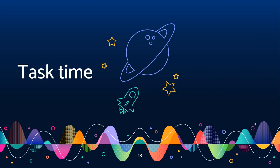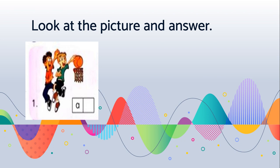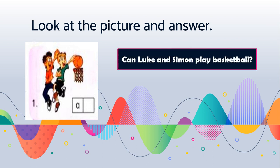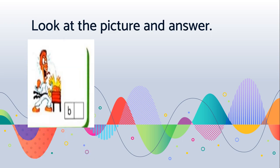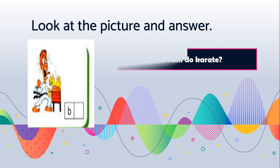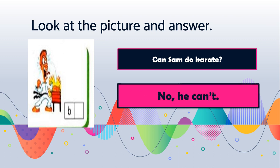Now it's task time. Look at the picture and answer. What are they doing? Playing football. So how will the question be? Can Luke and Simon play basketball? Answer: yes, they can. Now look at this picture — yes, karate. The question is: can Sam do karate? You can't write can Sam karate — karate is the object, so the verb will be do. Can Sam do karate? No, he can't.